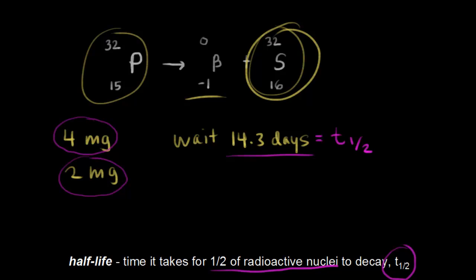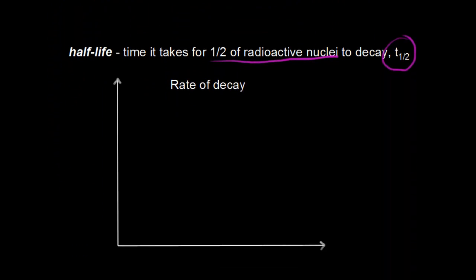We're going to stick with phosphorus-32 in this video, and we're going to start with four milligrams every time in this video, just to help us understand what half-life is. Next, let's graph the rate of decay of phosphorus-32.